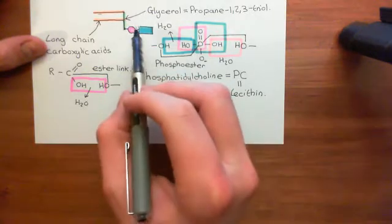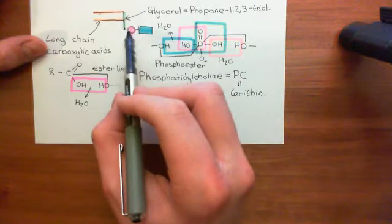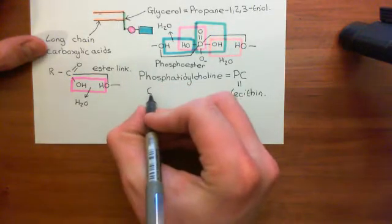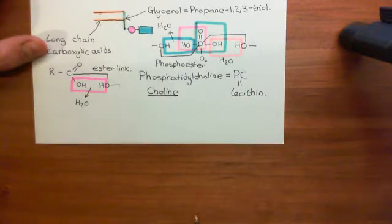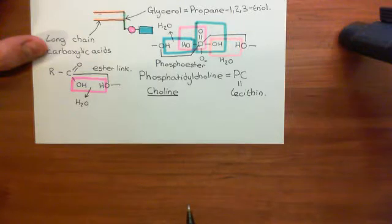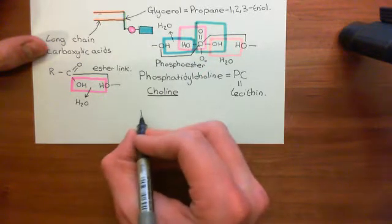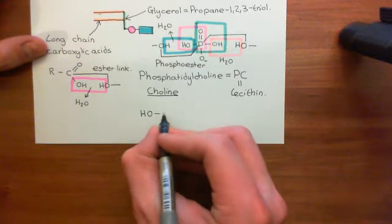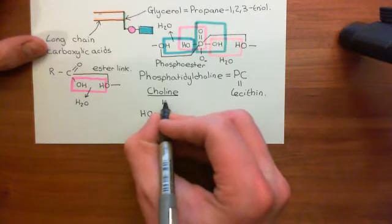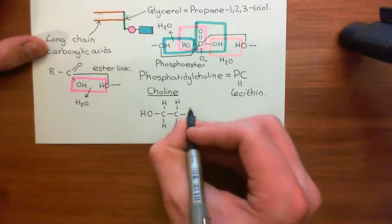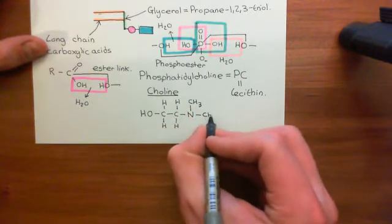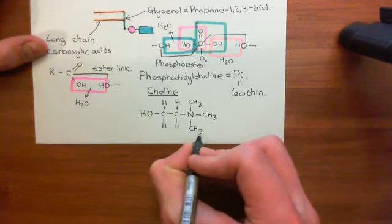What I need to tell you is what the group phosphoesterified onto the phosphatidic acid molecule actually is — it's going to be a choline molecule. This is the same choline as in the famous neurotransmitter acetylcholine, where acetic acid has been esterified onto choline, which is an alcohol. Choline on its own has that alcohol group, then an ethylene group — a two-carbon structure — and on the other side of the ethylene group, a nitrogen atom with three methyl groups coming off it. That is the choline molecule.